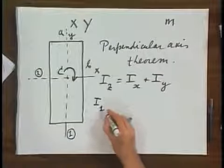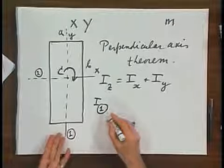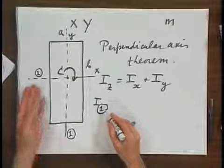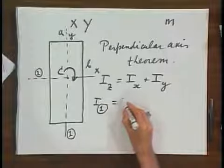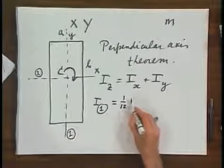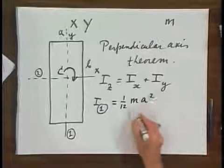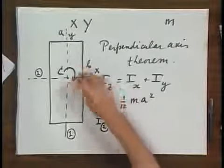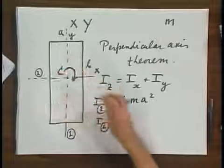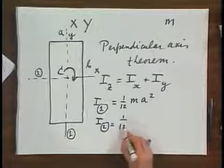I of 1, you either look up in a table or you derive it as we did in a different segment. I of 1 equals 1/12 times M A squared. I of 2, about this rotation axis, equals 1/12 M B squared.